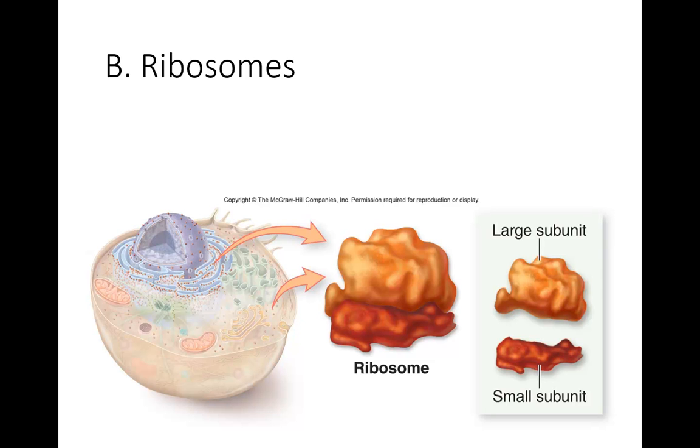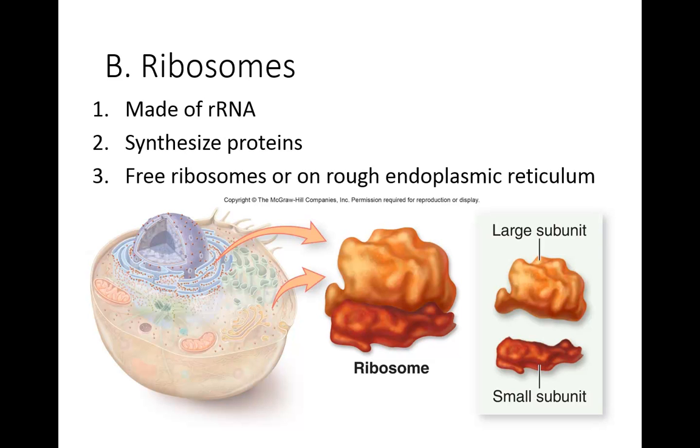Ribosomes are the organelles made of ribosomal RNA that synthesize proteins. Meaning they take messenger RNA and they take transfer RNA, and they link amino acids together to make proteins. There are free ribosomes which are in the cytoplasm. All cells have those, especially prokaryotes. And there are also some that are bound on endoplasmic reticulum or rough endoplasmic reticulum as well.